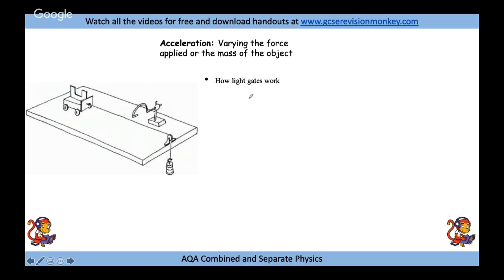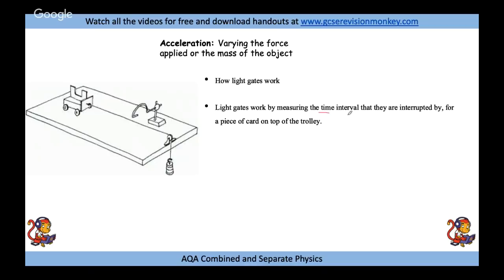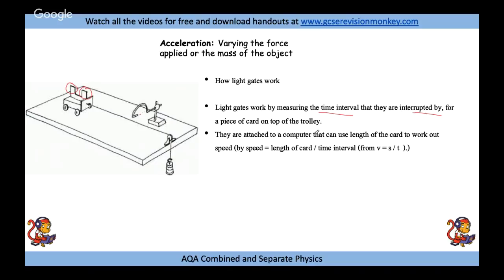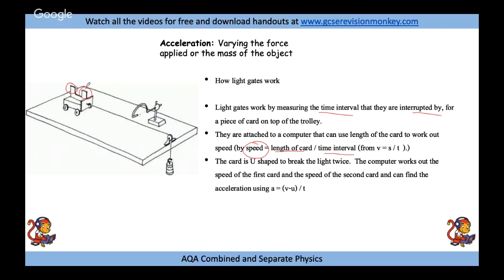Light gates work by measuring the time interval during which a piece of card on top of the trolley interrupts a laser beam. The computer uses the card's length and the time it blocks the beam to calculate speed. The card is U-shaped, so it breaks the beam twice. The computer works out the speed at the first and second interruptions, then finds the acceleration using a = (v − u) / t — the change in speed over the time between the two card passes.